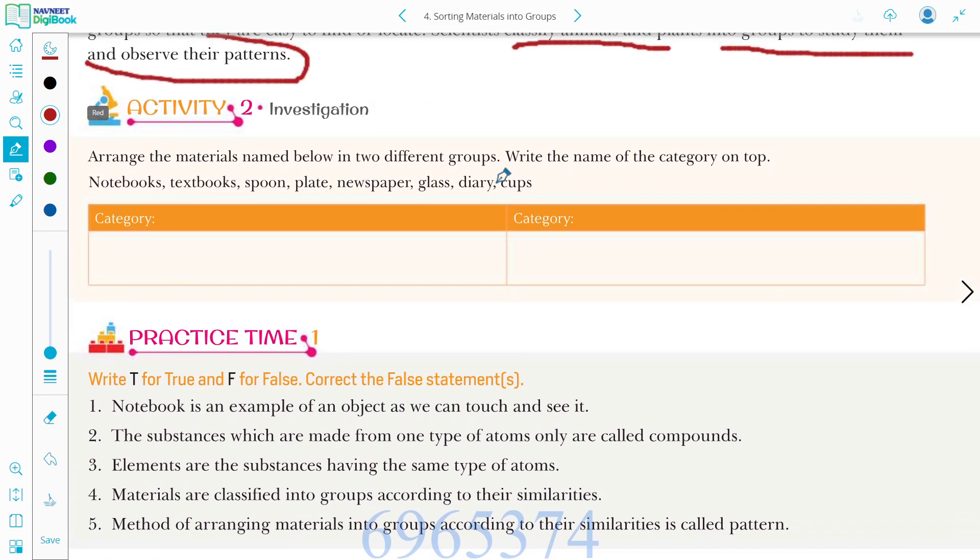Activity 2 is given to you. You need to arrange the materials and give them the category. Notebook, textbook, spoon, plate, diary, cup, glass, newspaper is given to you. You can arrange it according to the category.